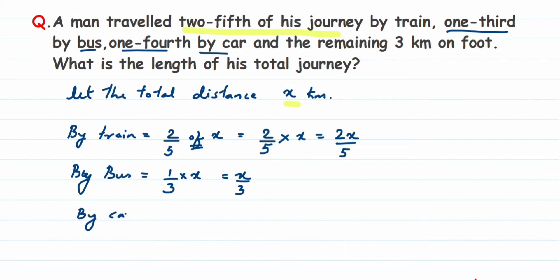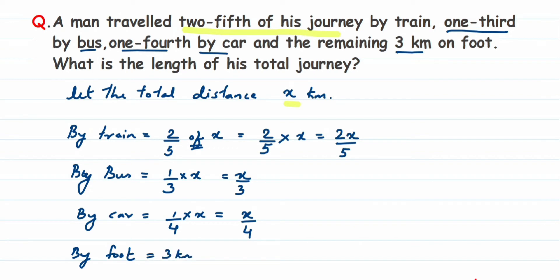By car, he traveled one-fourth of the journey, which is one upon four into x, giving us x/4. The remaining distance he covered on foot is three kilometers.